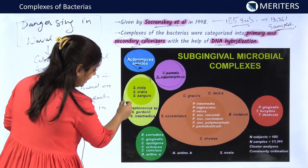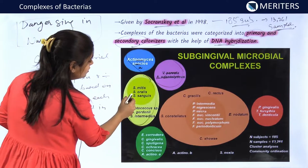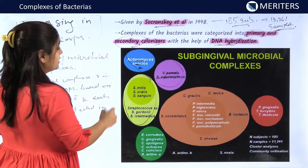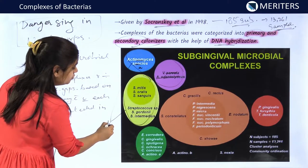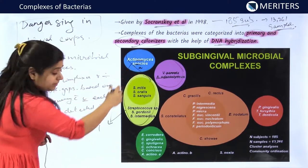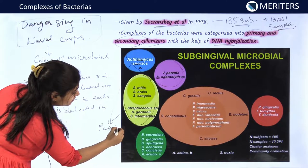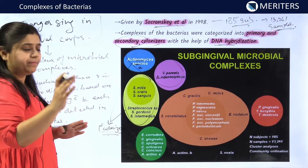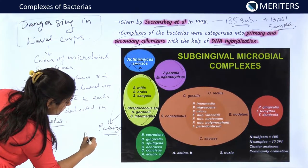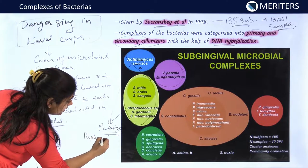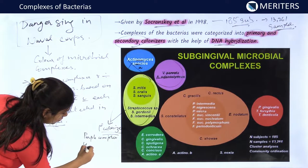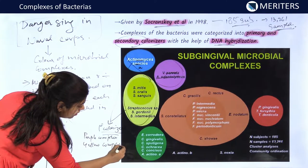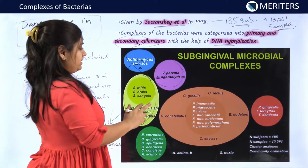The second complex is the yellow complex. The yellow complex consists of Streptococcus mitis, oralis, sanguis, and other Streptococcus species. These two complexes — the purple complex and yellow complex — are the primary colonizers.